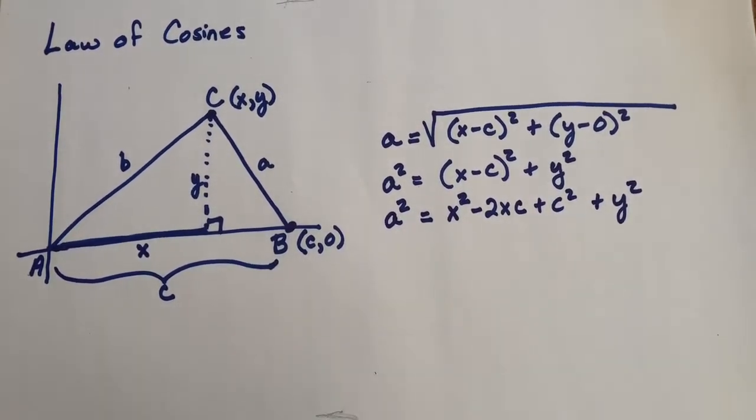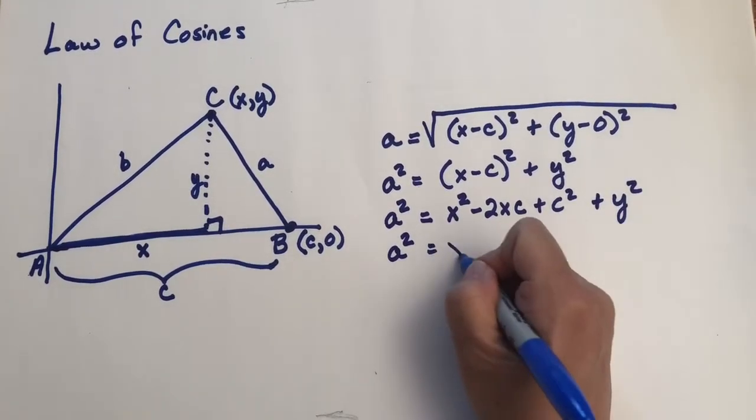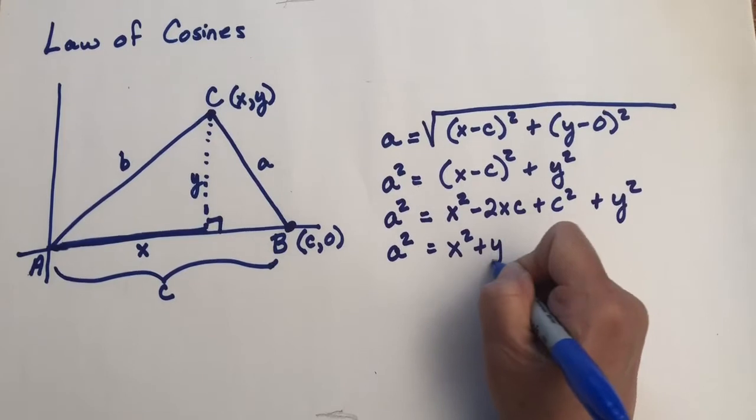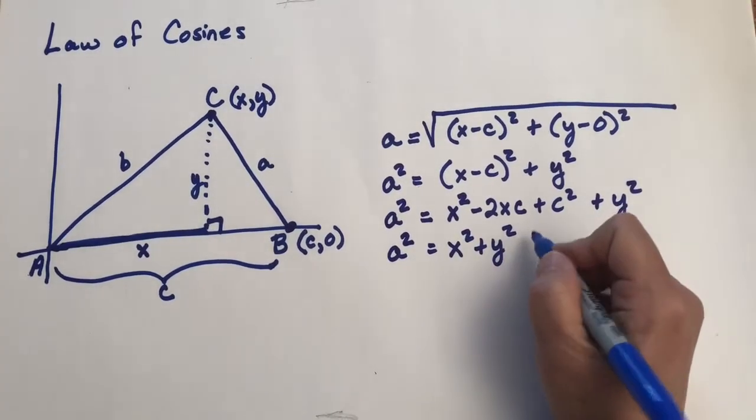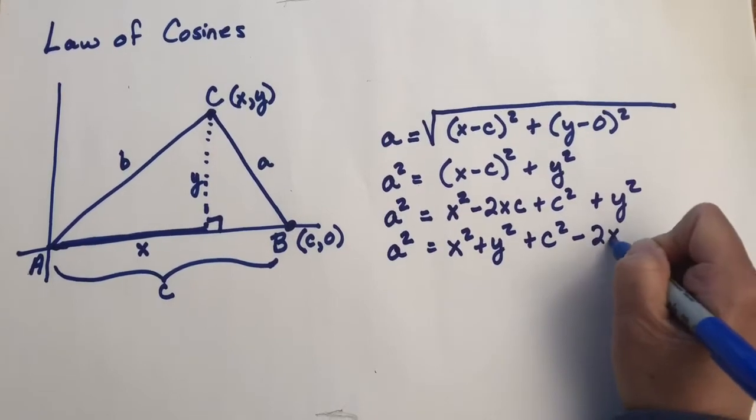Now I just feel like rearranging the terms, so let me do that. I'm going to have A squared equals X squared and Y squared together, and then I'm going to have the plus C squared and the minus 2XC.